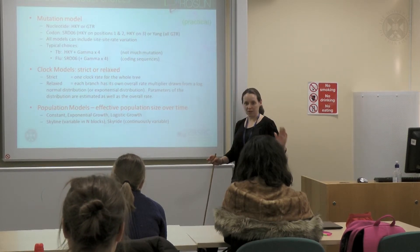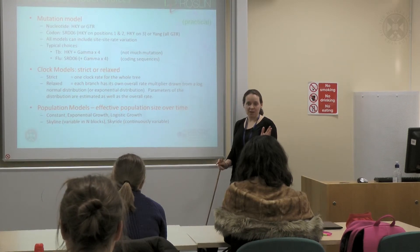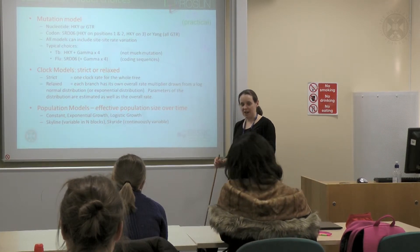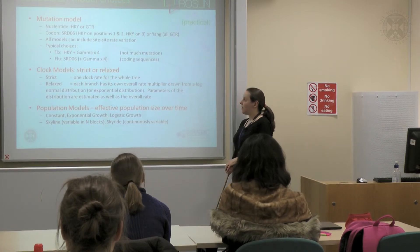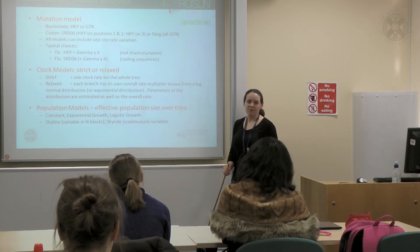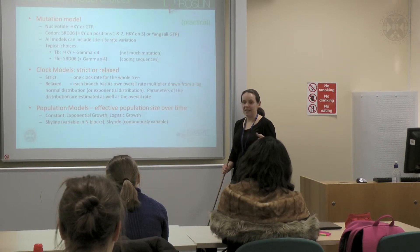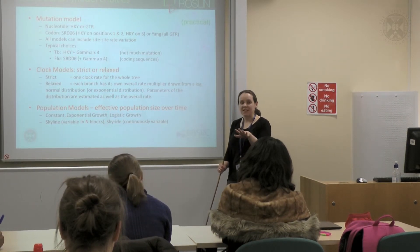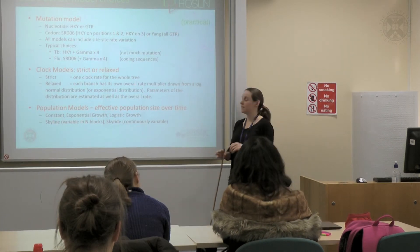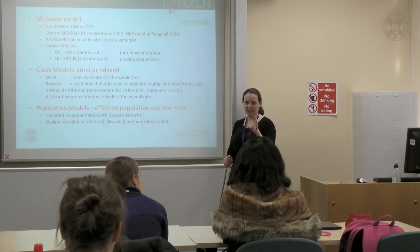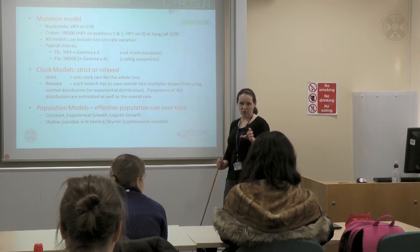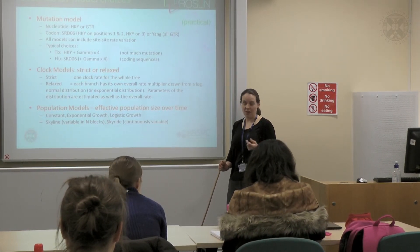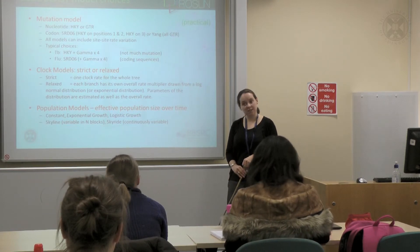You could have one clock model for the entire tree, because all the sequences are from the same population and the same host. However, if you're dealing with a slightly more diverse situation — perhaps viruses from different host species, different locations, or different epidemics — you might say it's not going to be exactly one clock rate for everything. In that case, you would use a relaxed clock model, where you still have an average clock rate but allow rate multipliers so that parts of the tree can go a bit quicker than other parts.